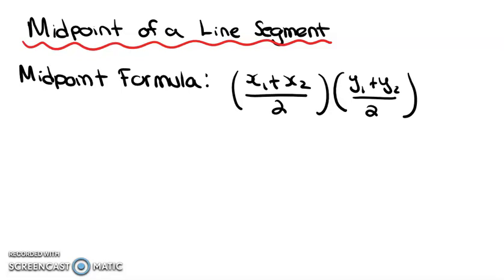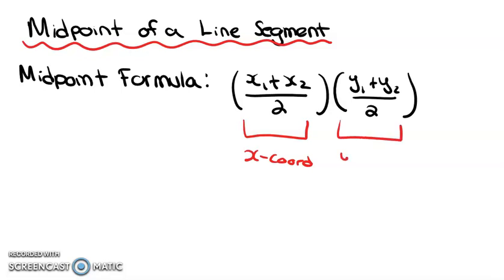The formula is as follows on the screen. It is x1 plus x2 over 2, and that'll give you the x coordinate of your midpoint. And then we have y1 plus y2 over 2, and that's going to give you your y coordinate.